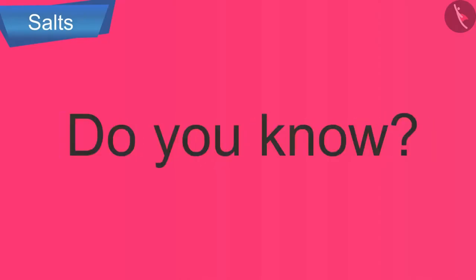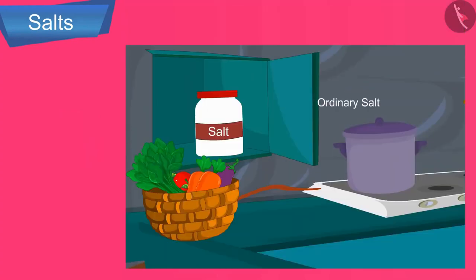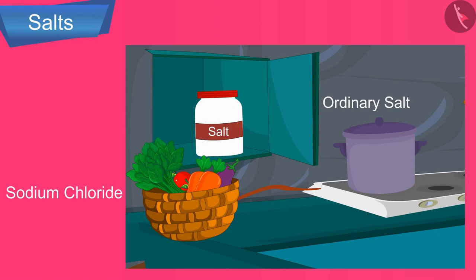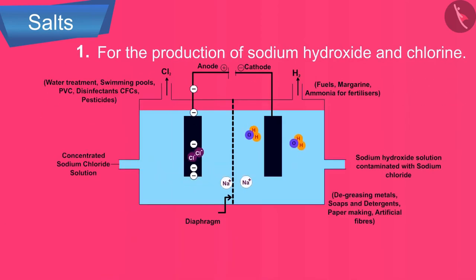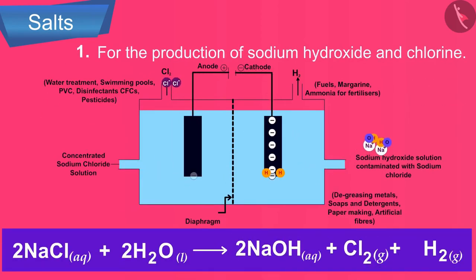And friends, do you know that ordinary salt, sodium chloride, is an important raw material for the substances of our daily use. For example, for the production of sodium hydroxide and chlorine. The various uses of the three products resulting from this process are shown here. This process is called the chloralkali process.